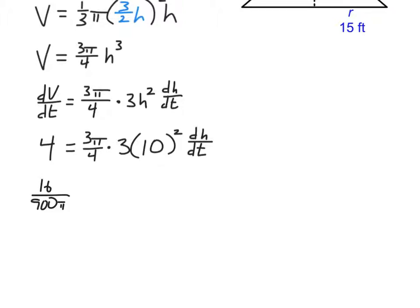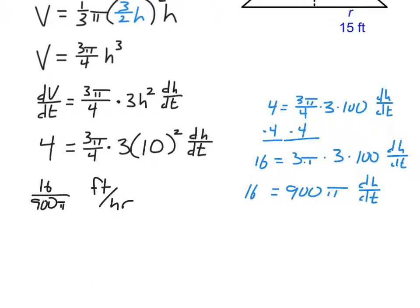The calculation works out to 16/900π. Reducing by dividing top and bottom by 4, we get 4/225π feet per hour.